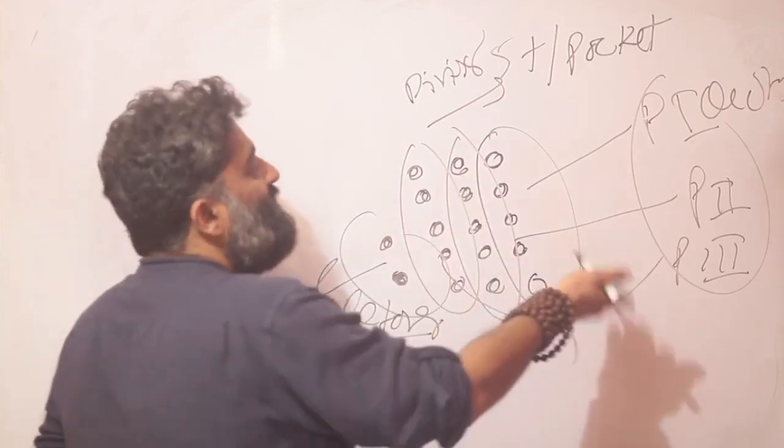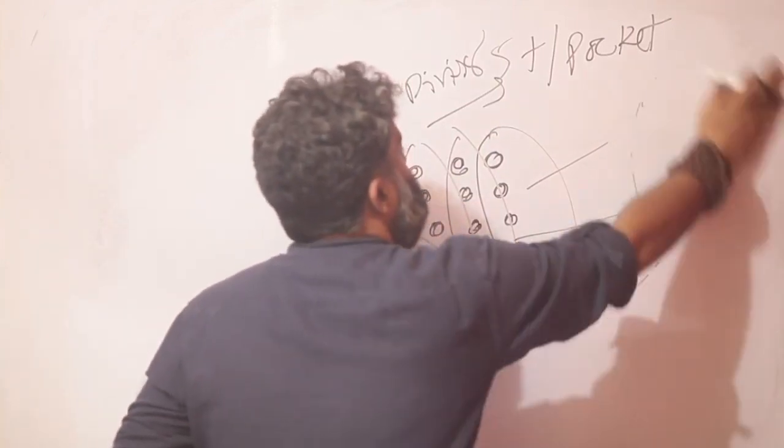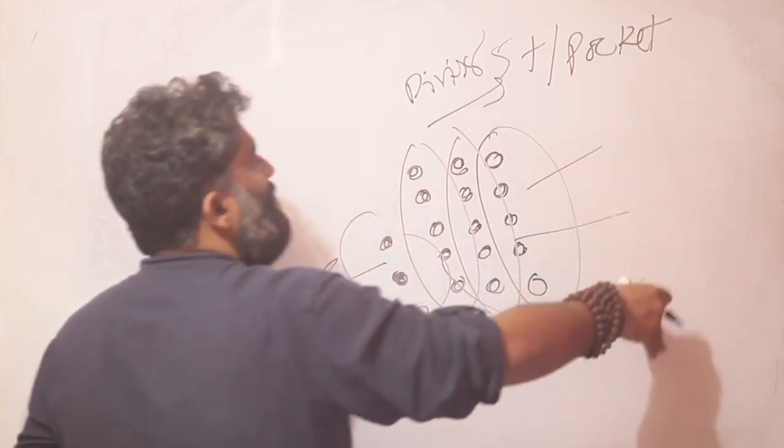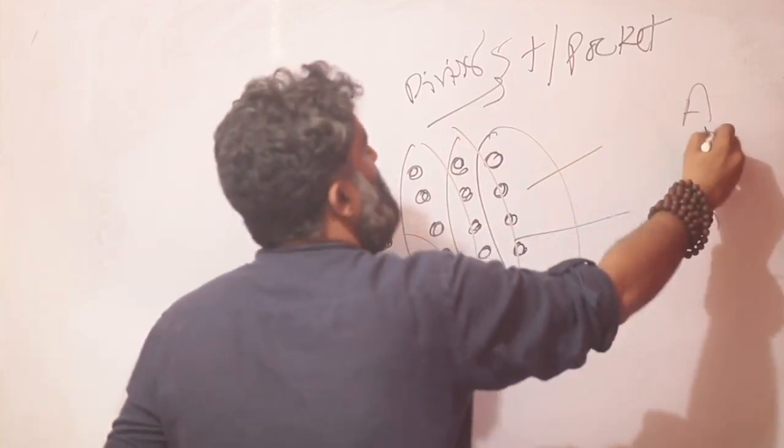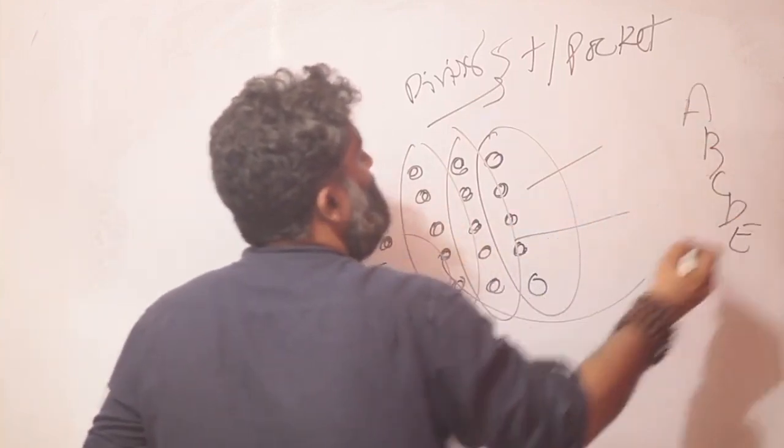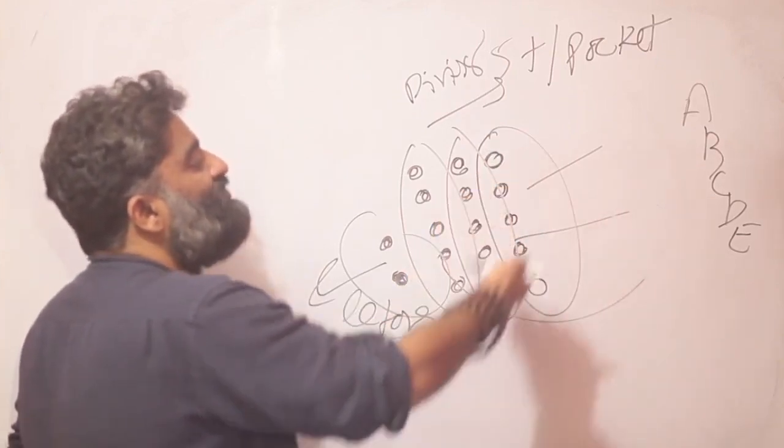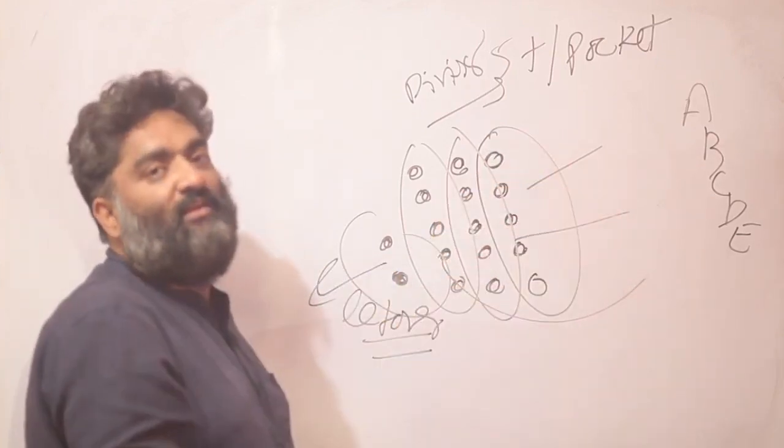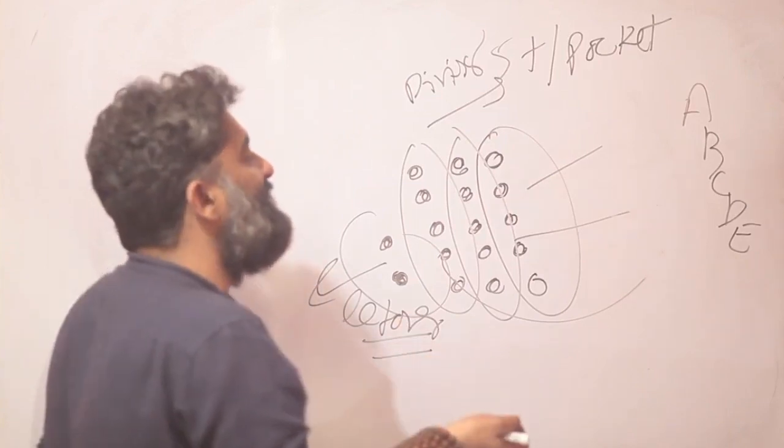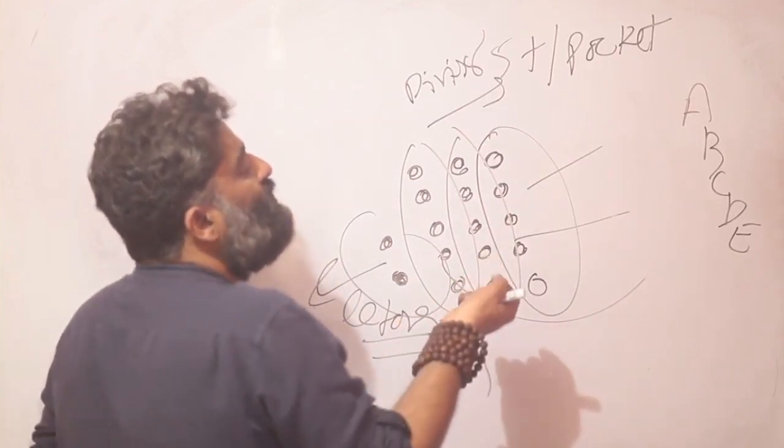Another way of thinking of the same story could be that there are 5 children: A, B, C, D, E. You want to give them, you want to divide these toffees between them equally. That would be the verbal interpretation of this. So how would you go about it?